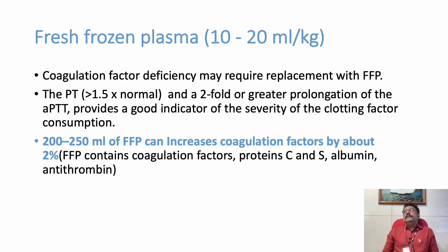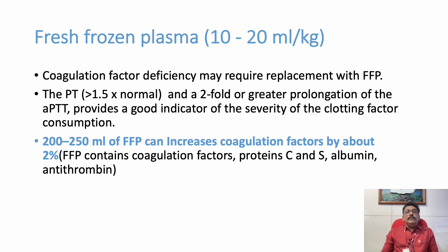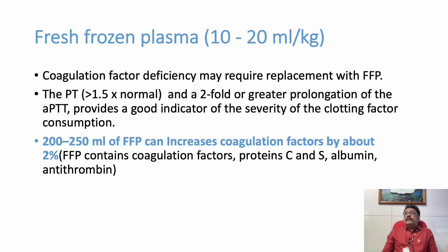Once DIC is diagnosed, coagulation factors and platelets must be replaced. Fresh frozen plasma is given to correct coagulation factor deficiency, at a dose of 10 to 20 ml per kg. If INR is more than 1.5 and the patient is developing bleeding tendency, FFP must be given. Note that 200 to 250 ml of FFP increases coagulation factors by only about 2%, so larger amounts are often needed.